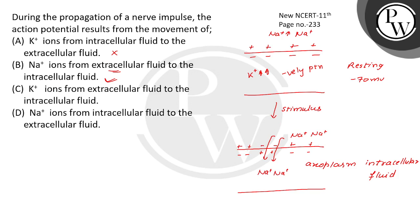The correct movement is sodium ions from extracellular fluid to intracellular fluid. In a resting nerve fiber, the membrane is impermeable to sodium and permeable to potassium ions. When sodium channels open, the membrane potential changes. The correct option is B. This information is from NCERT class 11, page 233. Thank you.